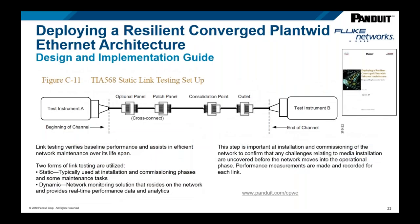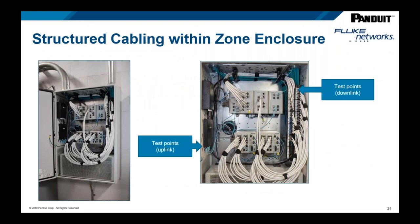You'll find more references to these types of standards in your industrial control vendors' literature. One highlighted resource is a Rockwell Automation, Cisco, and Panduit document called 'Deploying a Resilient Converged Plantwide Ethernet Architecture' — a guide around physical network deployment covering overall controls, network design considerations, and appropriate elements from TIA. If you're looking for a starting point, this is a great place to start.